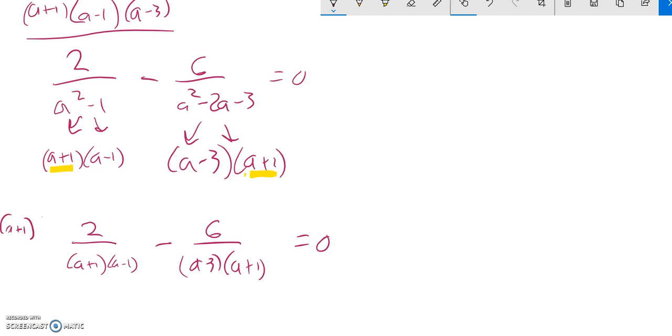And everything gets multiplied by that. So, times a plus 1, a minus 1, a minus 3 times a plus 1, a minus 1, a minus 3. And then this gets multiplied by it as well. And fortunately on the right hand side, 0 times anything is 0, so that's that.